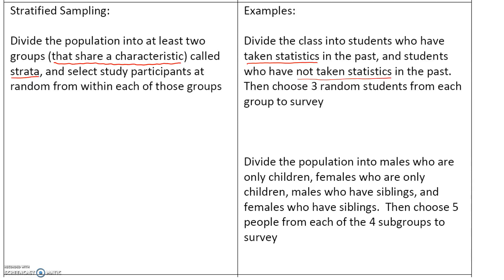Another example: we can divide the population into males who are only children, females who are only children, males who have siblings, and females who have siblings. In each group, every member shares common characteristics — for instance, the first group are males and only children, the second group are females and only children. Each member of a group shares those common characteristics. Then we choose five people from each of the four subgroups to survey.